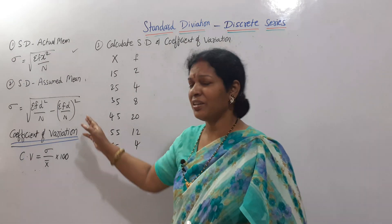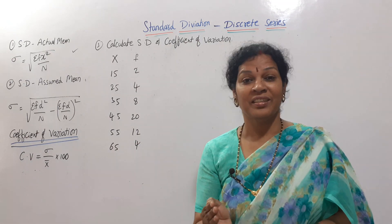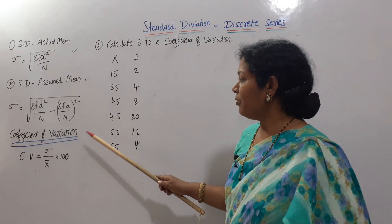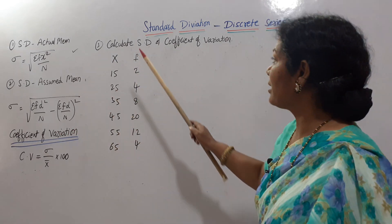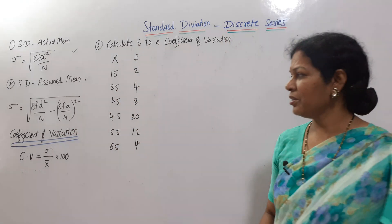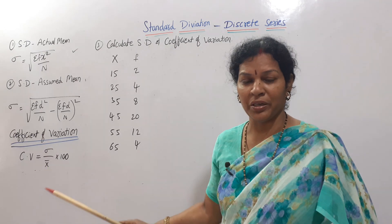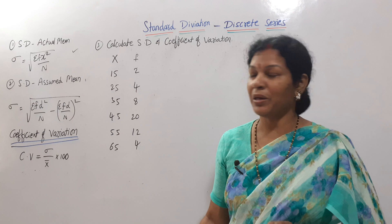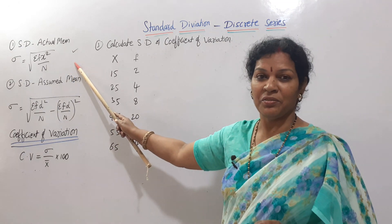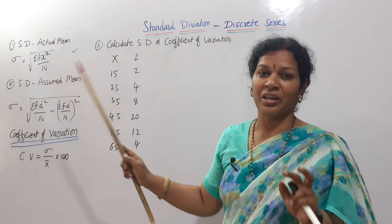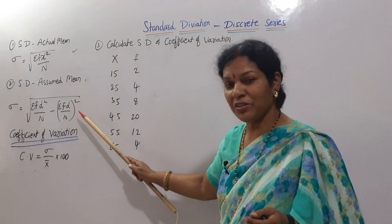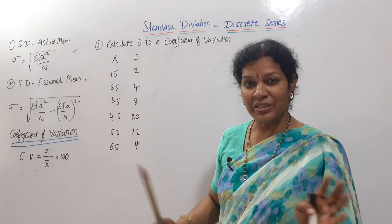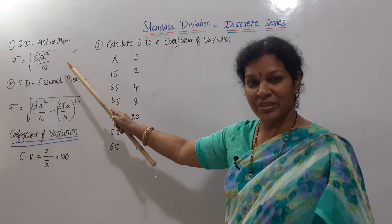Some people write it as f·dx, some as f·d — it doesn't matter. Now formulas are clear. The problem asks us to calculate standard deviation and coefficient of variation. The CV formula is rho divided by x-bar, times 100 — so we need x-bar. It's better to use the actual mean method so we get both x-bar and standard deviation at the same time; using the assumed mean method would double the work.